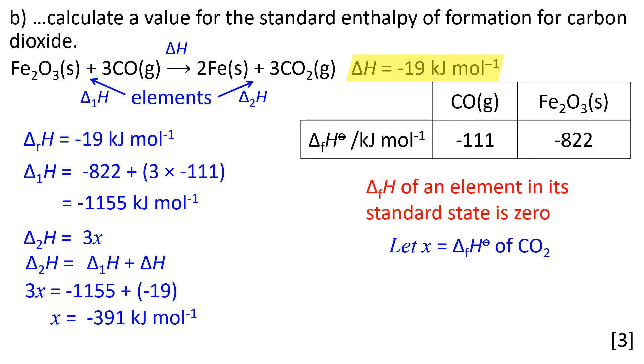If we solve for x, we get the enthalpy of formation of carbon dioxide equal to -391 kJ mol⁻¹. That's a good template for setting your working out. Don't forget to put the units on and the direction of the enthalpy change.